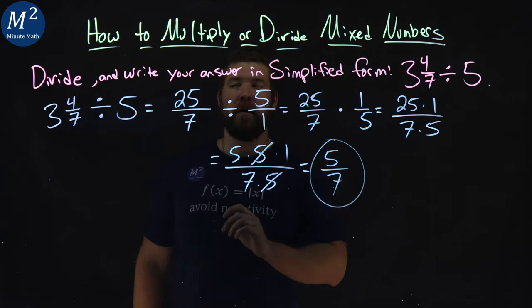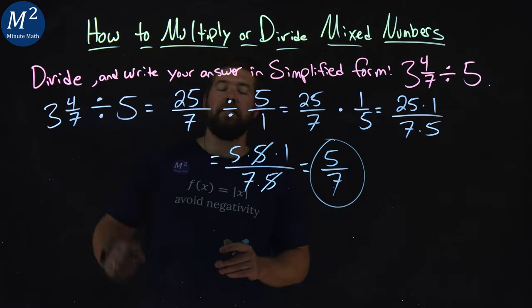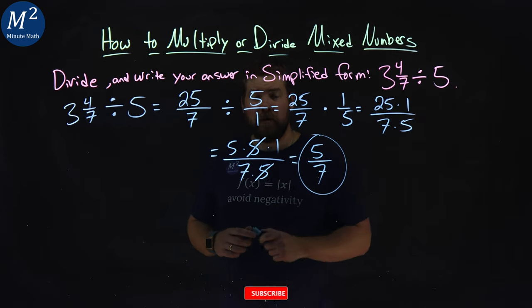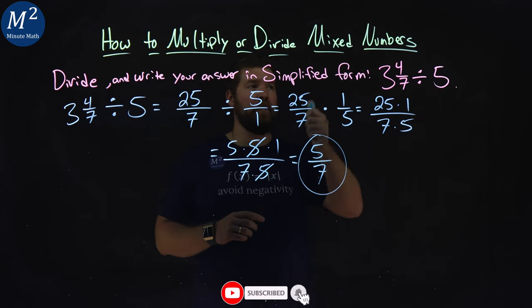And there we have it. 3 and 4/7ths divided by 5 is equal to 5/7ths. Hope you learned something here. How to multiply or divide mixed numbers.